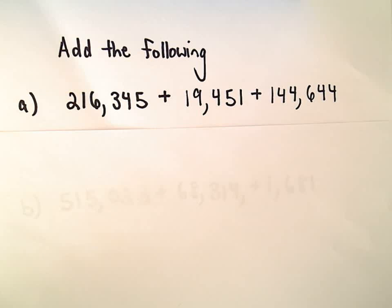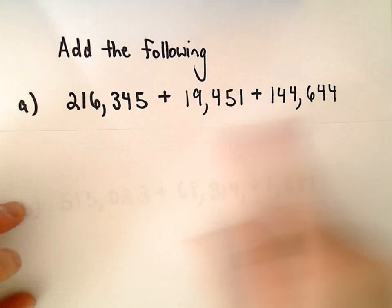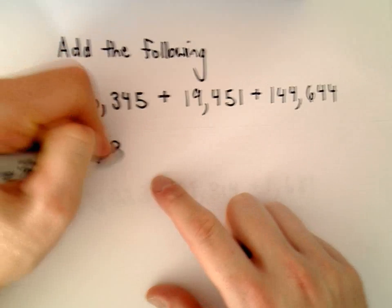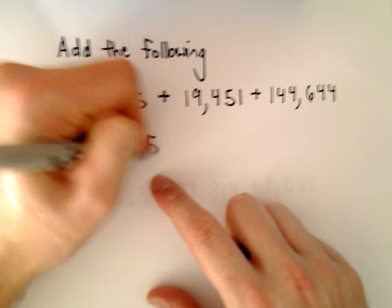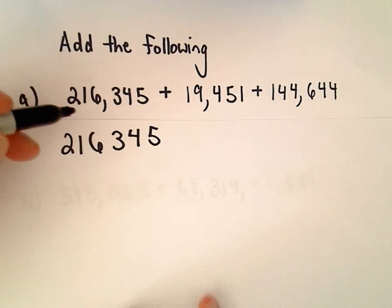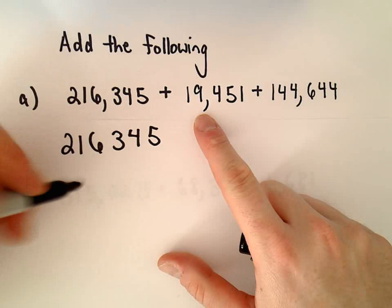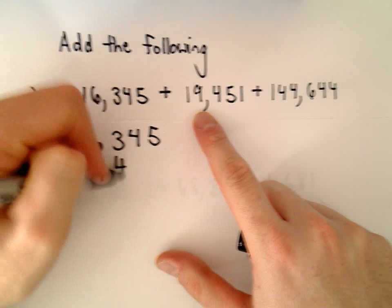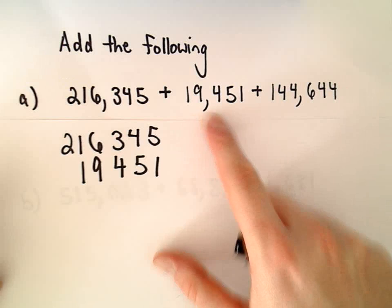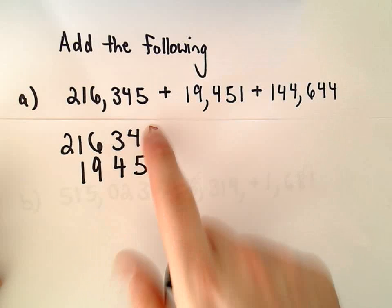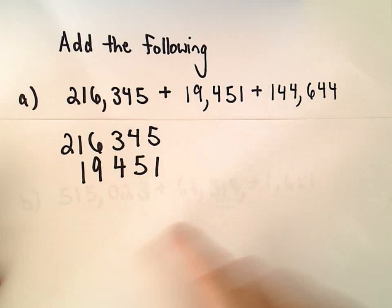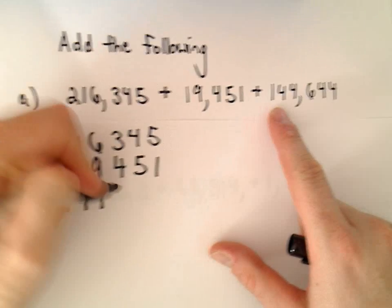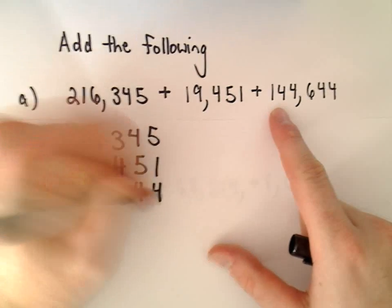Which again is okay, so I'm just going to line everything up here. So I've got 216,345. Of course if you want to keep the commas in there you can, I usually leave them out. We've got 19,451, again notice how I'm making everything line up, the ones, tens, hundreds, thousands, etc. And then we've got 144,644.